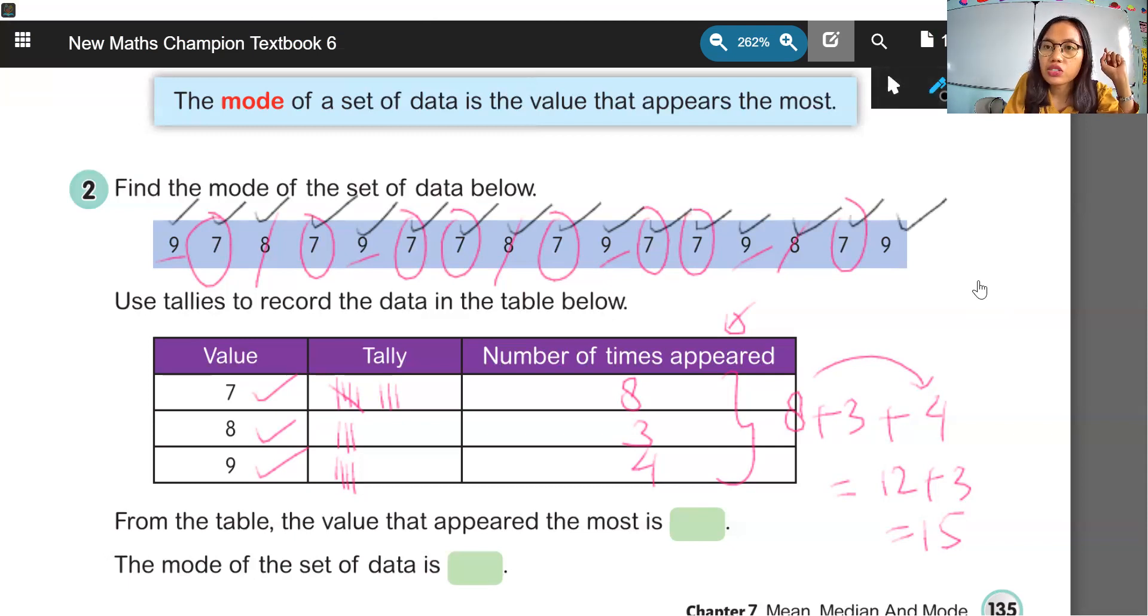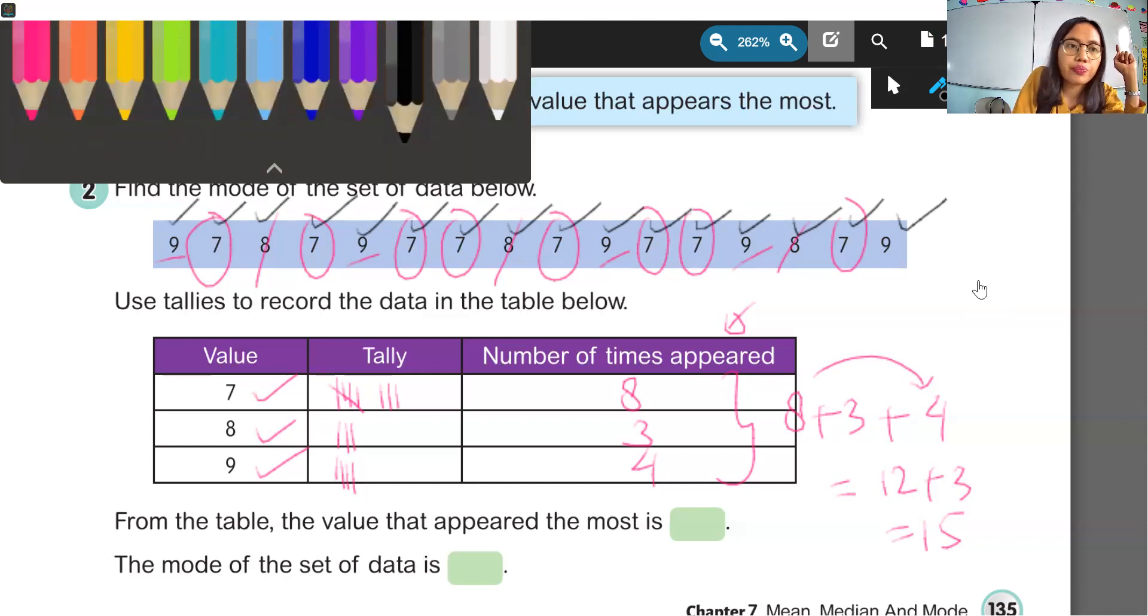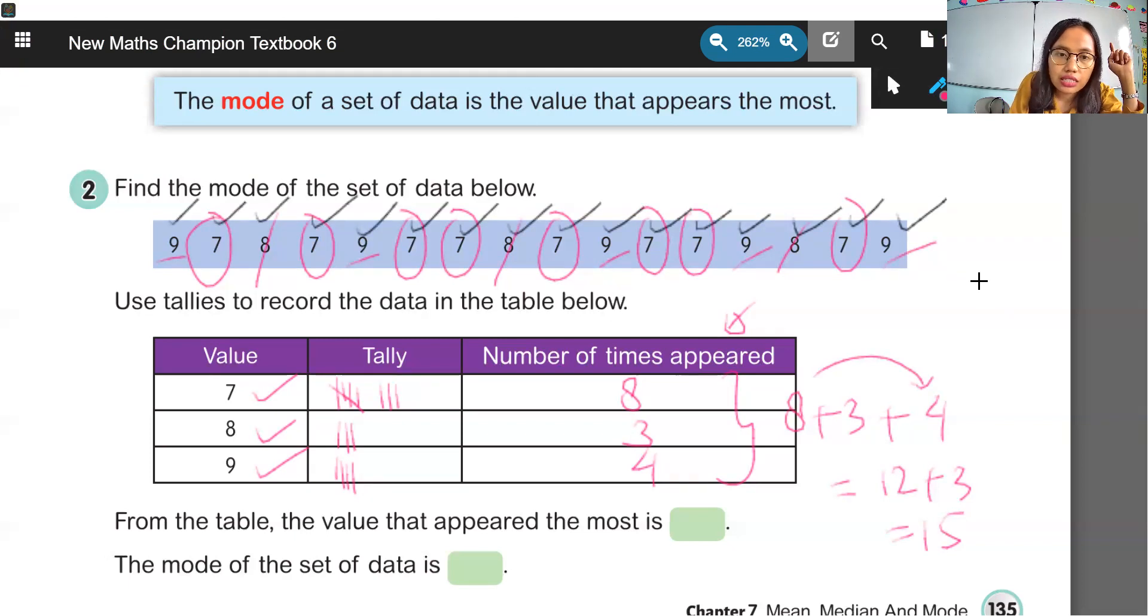So, let's see. Which is number 9, yang belum kita hitung. So, we have 9 in here. Just put 9. So, we have 5. So, if we have 8 plus 3 plus 5, it's gonna be 16.